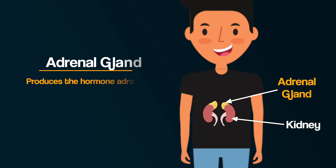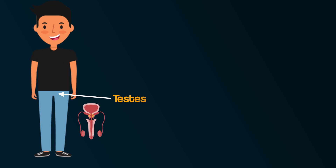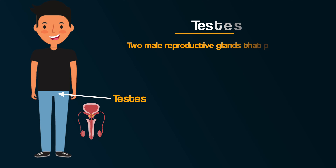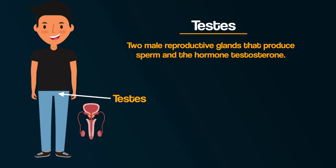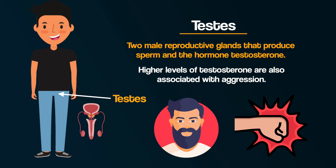The adrenal glands, near the kidneys, produce the hormone adrenaline, which stimulates the sympathetic nervous system and brings about the fight or flight response. Finally, the testes are two male reproductive glands that produce sperm and the hormone testosterone. This hormone causes the development of male characteristics, such as growth of facial hair and deepening of the voice. Higher levels of testosterone are also associated with aggression.